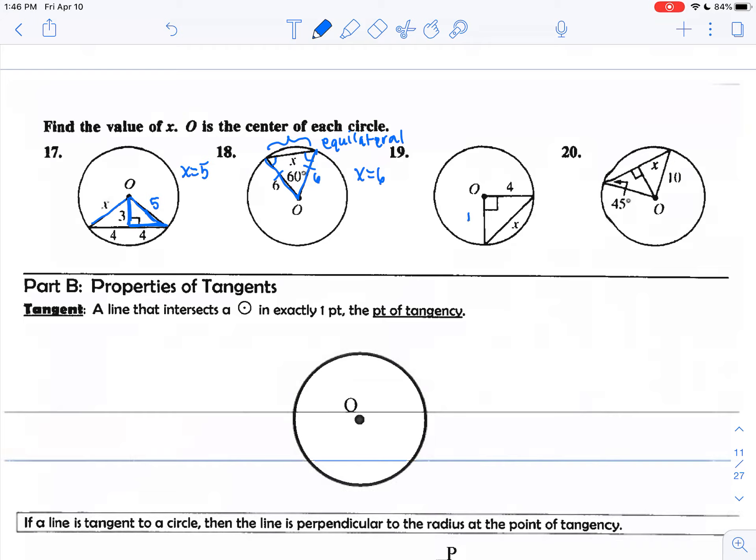Number 19, what kind of triangle do you think that is? If you said an isosceles right triangle. You have that this segment is the radius and so is this, they're congruent. So we have a 45-45-90 triangle, in which case to go from the leg to the hypotenuse, you would multiply by root two. So X equals four root two.